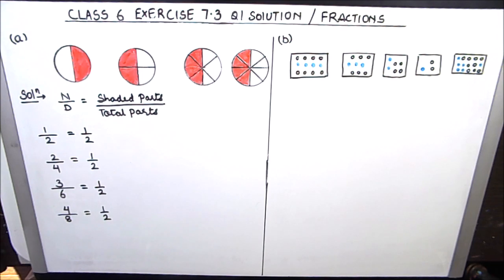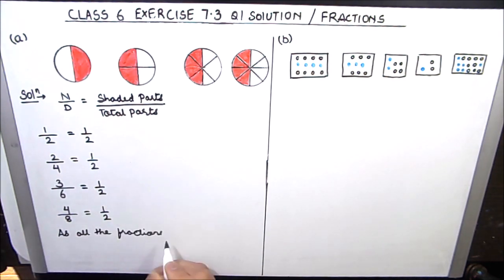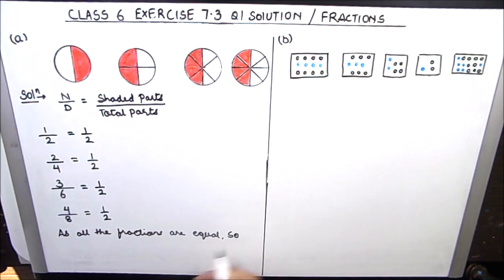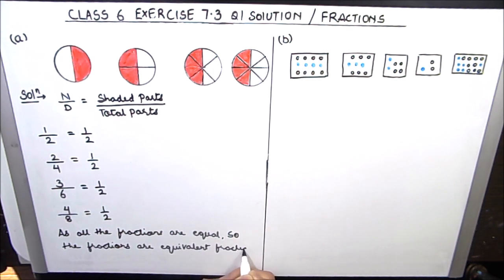Now we see that all the fractions have been written and all the fractions in simplest form are equal. Since all the fractions are equal, the fractions are equivalent fractions. This completes our part A. Let's move on to part B.